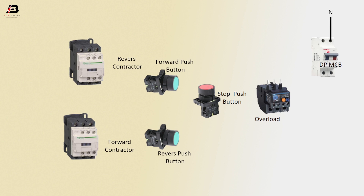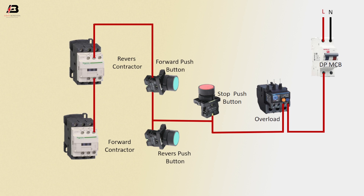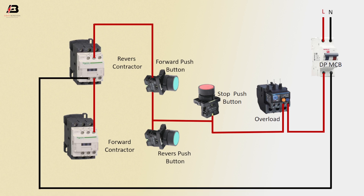Neutral connection input to double-pole MCB. Phase connection input to double-pole MCB. Phase connection output from double-pole MCB to overload. Phase connection output from overload to stop push button. Phase connection to forward and reverse button. Phase connection from forward push button to connect reverse contactor. Phase connection from reverse contactor to forward contactor coil connection. Neutral connection from double-pole MCB to connect reverse contactor. Neutral connection to forward contactor coil connection from reverse contactor to connect forward contactor.